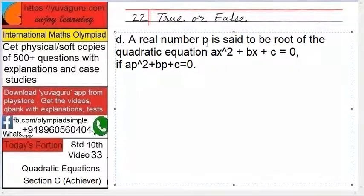Next, a real number P is said to be the root of a quadratic equation ax squared plus bx plus c equals to 0 if ap squared plus bp plus c equals to 0. So, it means that if you input the value of p in this instead of x, you must get 0. So, that is true.